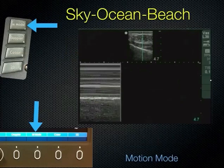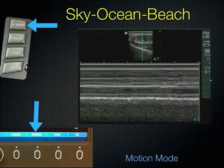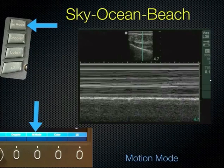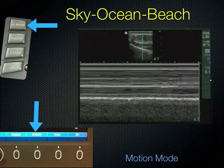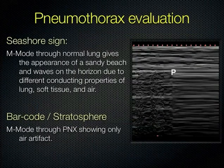For M-mode: place an M-mode line through the pleural interface and watch it over time. You get an image called sky-ocean-beach, also referred to as the seashore sign. The soft tissue above creates a striped appearance — the sky. The pleural line is bright white — the ocean horizon. If the lung is sliding underneath, you get a grainy effect due to motion — the beach. If the lung has dropped, the beach disappears and you have stripes all the way down — a barcode or stratosphere sign — because all you're getting are reverberations from soft tissue with no lung motion visible.